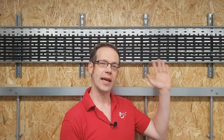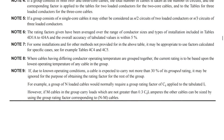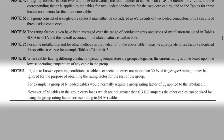In this case, do we really need to use all eight cables to figure out our grouping factor? Well, there is a way that may allow us to discount some of those conductors. Note 9 to the table sheds a little bit of light on this. It reads: if, due to known operating conditions, a cable is expected to carry not more than 30% of its group rating, it may be ignored for the purpose of obtaining the rating factor for the rest of the group.